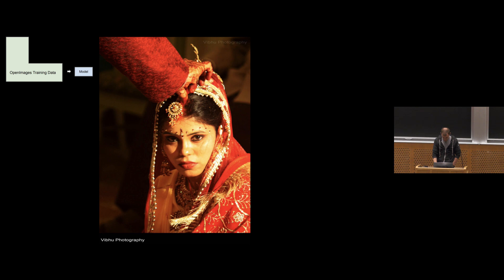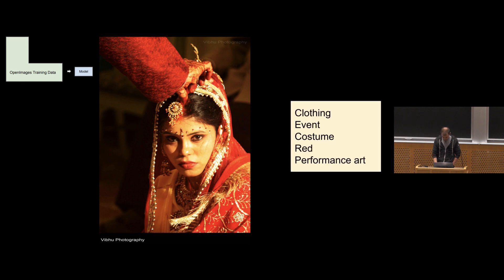Then we applied it to another image, also of a bride. And the model that we had trained up on this open-source image dataset returned the following classifications: clothing, event, costume, red, and performance art. No mention of bride. Also, no mention of person-ness, regardless of gender. So in a sense, this model has sort of missed the fact that there's a human in the picture, which is maybe not awesome and not really what I would think of as great success if we're claiming that image classification is solved.